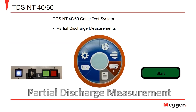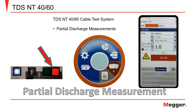To begin measuring partial discharge, set the proper voltage level per the cable rating and select the Start icon. The green High Voltage On button will illuminate. Press this button to output voltage and energize the cable. The red High Voltage Off button will illuminate as an indication that the cable is hot. Also, the status bar in the PD software cycles while the system is running.